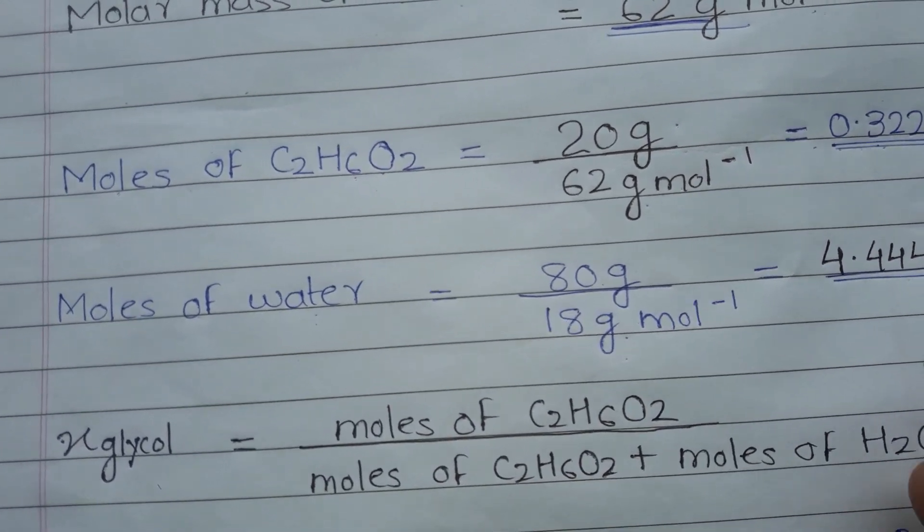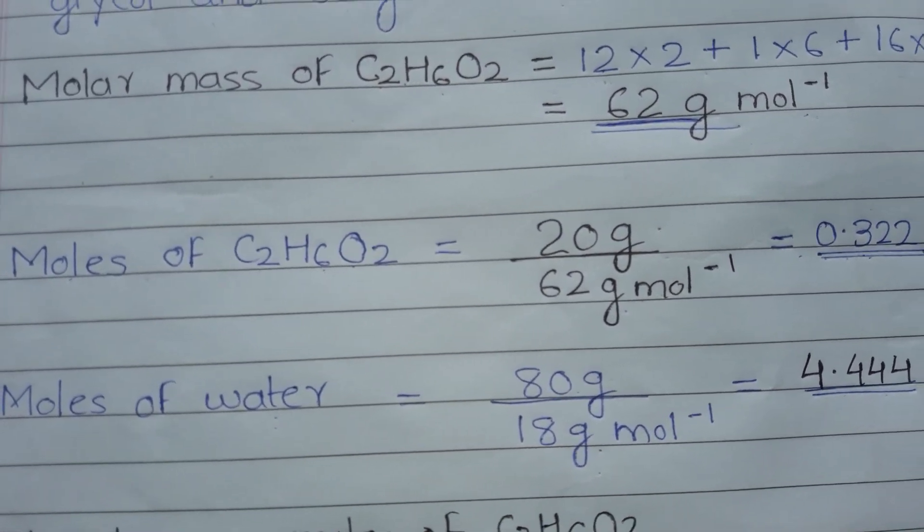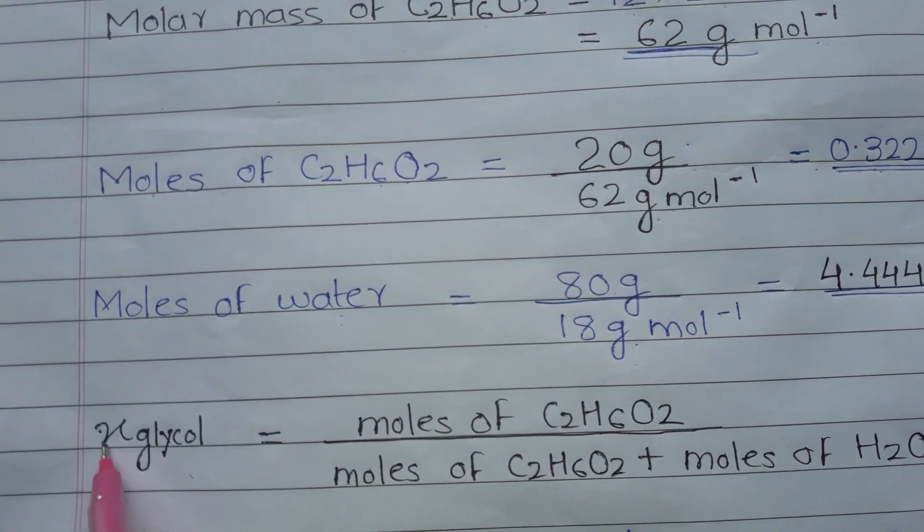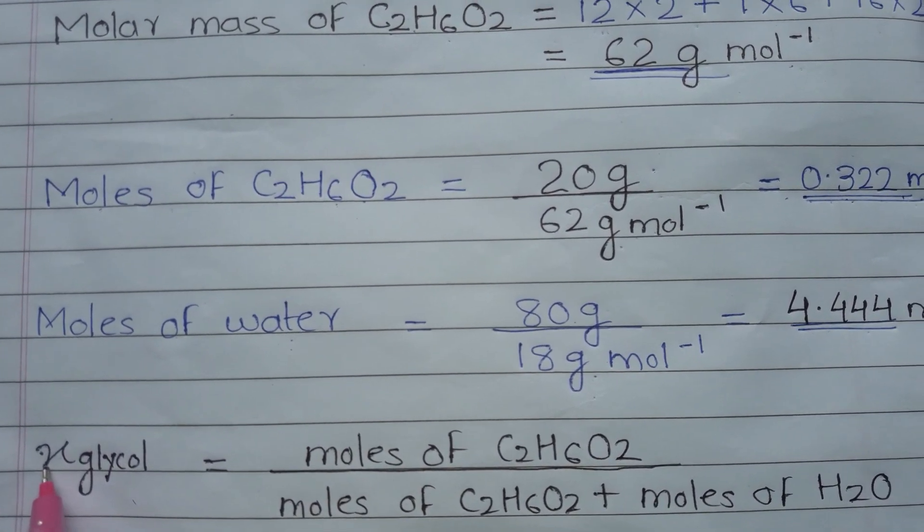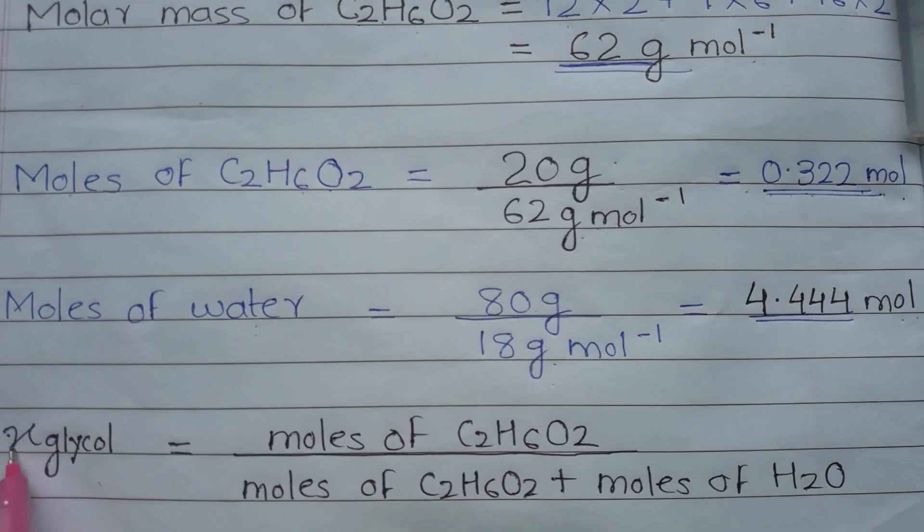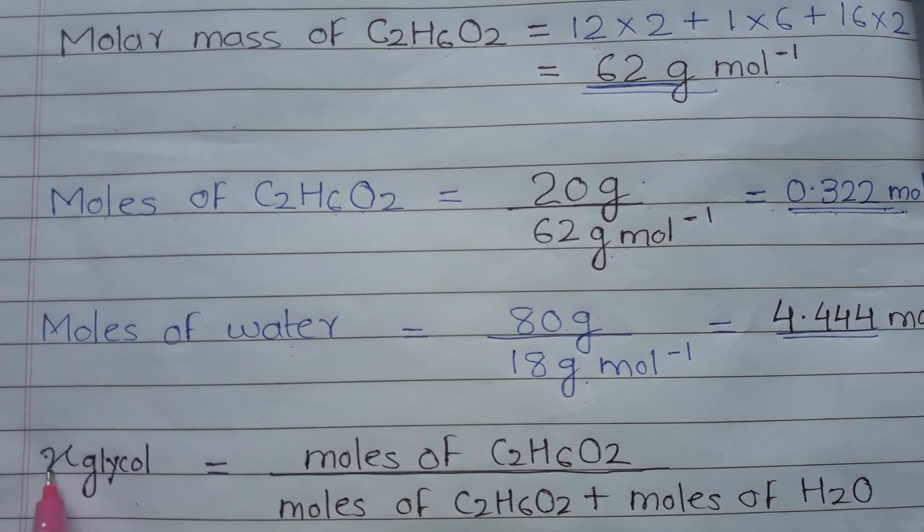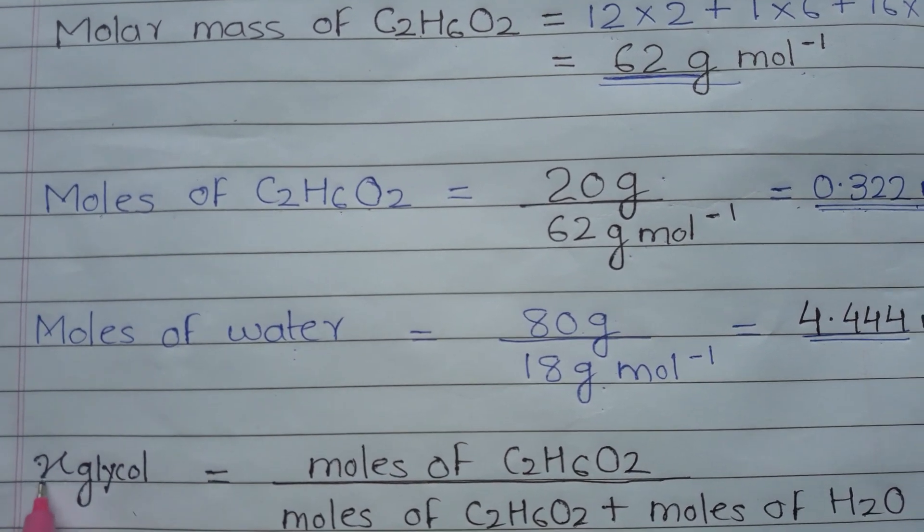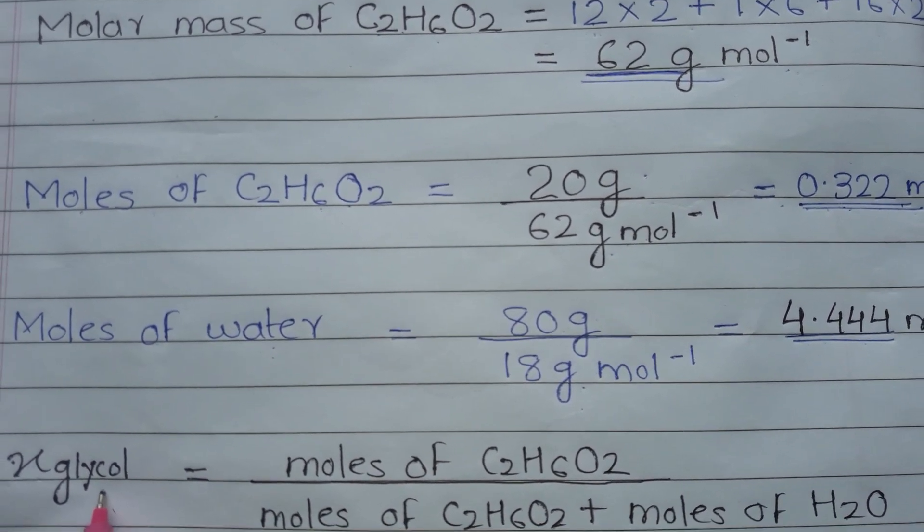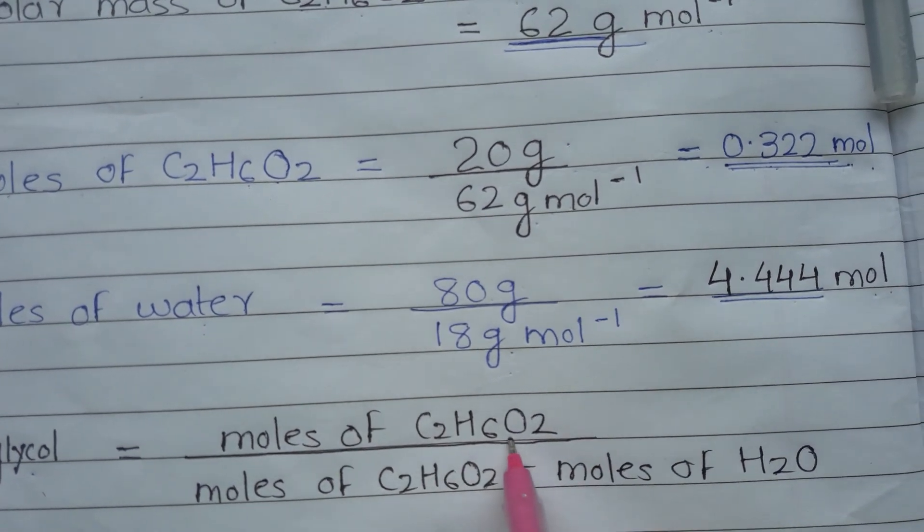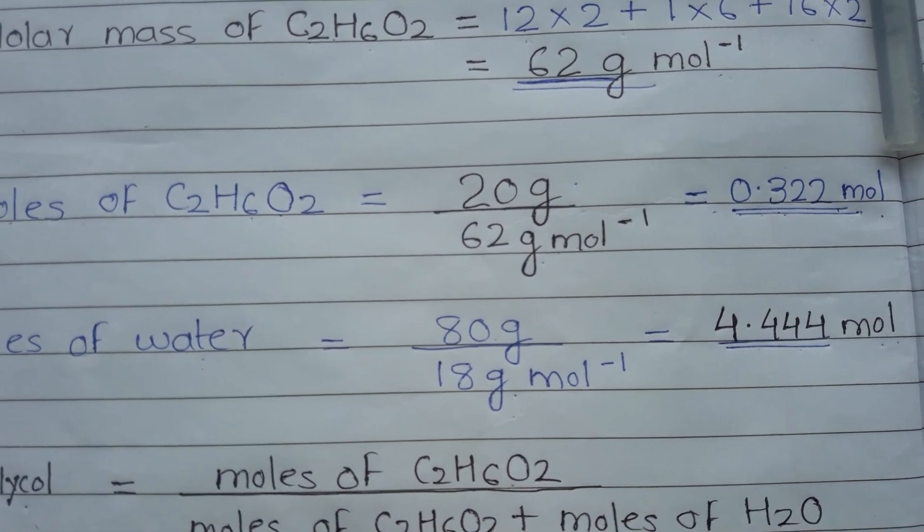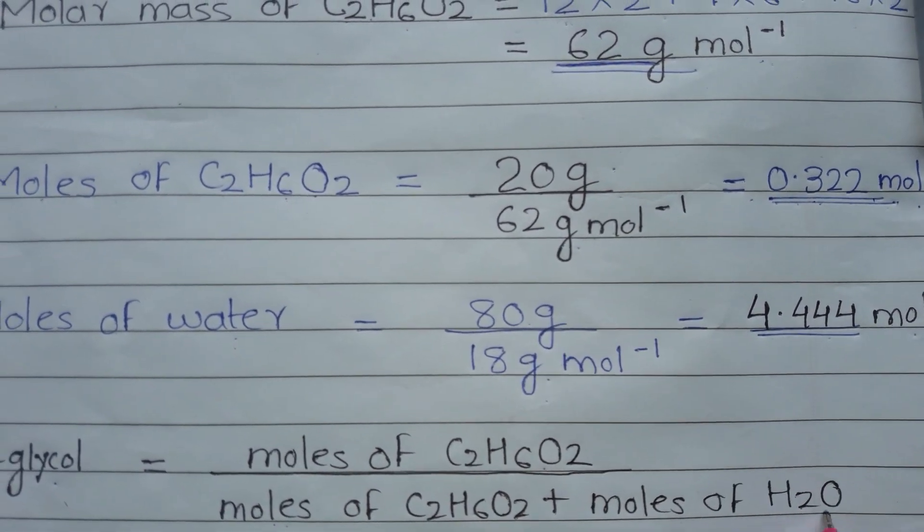Now finally, find out the mole fraction of ethylene glycol. We represent mole fraction by the alphabetical letter small x. So here we have mole fraction of ethylene glycol, which equals moles of ethylene glycol divided by total moles of solution, that means moles of ethylene glycol plus moles of water. This is the formula.